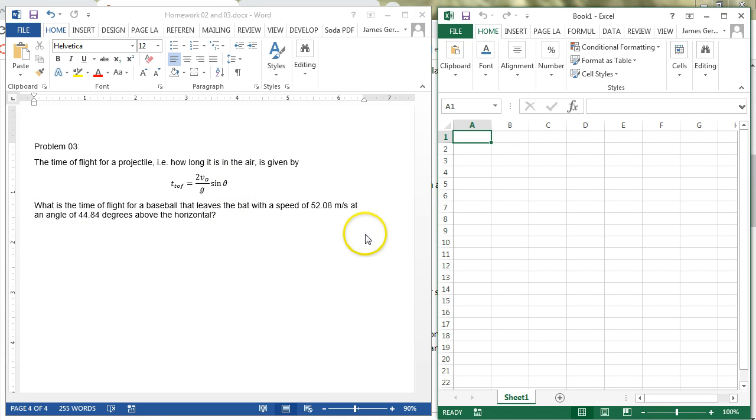All right, so in this problem, what do we have? We have the initial velocity, 52.08 meters per second. We have the angle, 44.84 degrees above the horizontal, and we want to know how long is it in the air. Well, we just put everything into the equation correctly. G is 9.8 for this exercise. That was given at the very top.